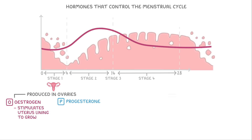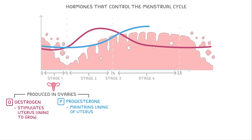Meanwhile, progesterone, which is also produced in the ovaries, increases in stage 4 and maintains the lining of the uterus. If progesterone levels drop, then the uterus lining breaks down, which restarts the cycle.